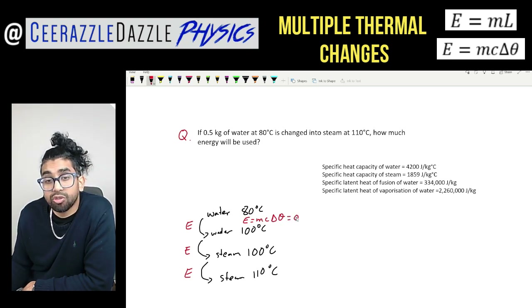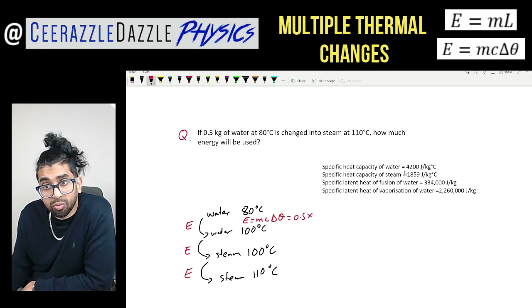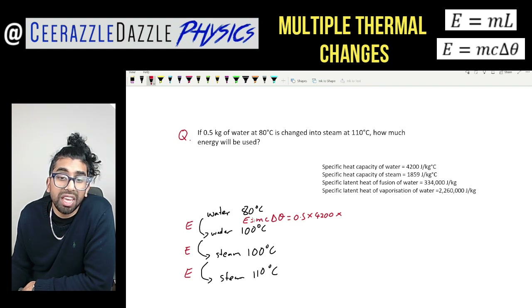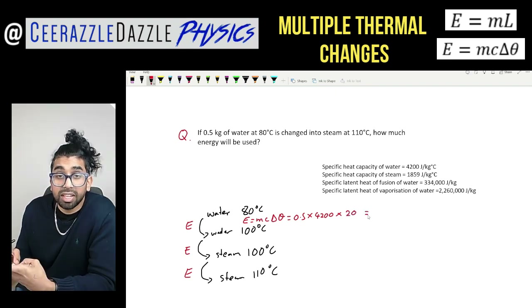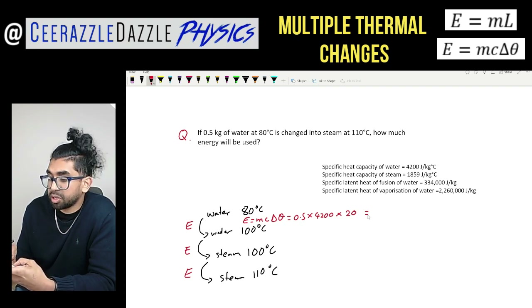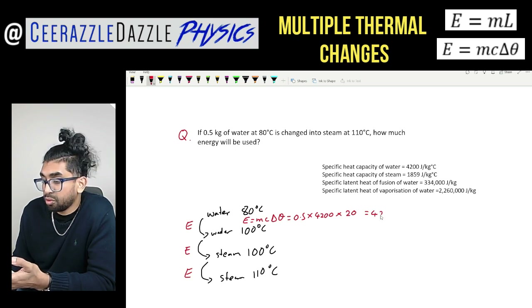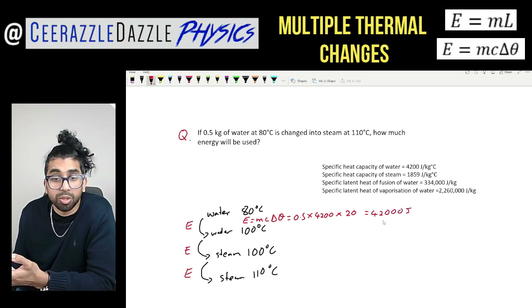The mass is 0.5 kg. The specific heat capacity of water is 4200 J/kg°C. The temperature change is 20 degrees (from 80 to 100°C). So: 0.5 × 4200 × 20 gives us 42,000 joules for the first stage.